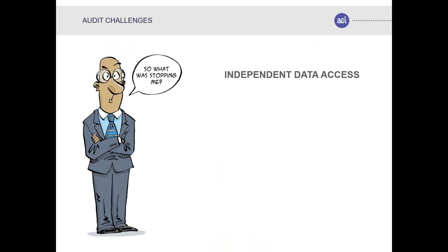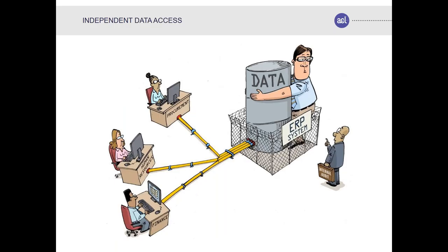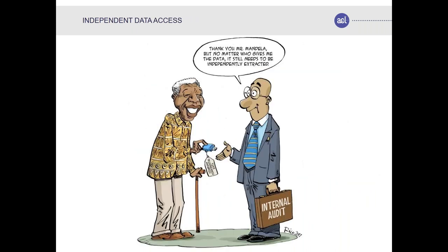Alan identified three big challenges preventing him from achieving continuous auditing. The first is independent access to data. An organization's various divisions — procurement, HR, finance — input transactions into the ERP system daily, but the CIO or IT effectively says 'that's my data, audit keep out.' Our goal is to completely reverse that. No matter who provides data, it must be independently extracted, regardless of how prestigious the individual providing it is.